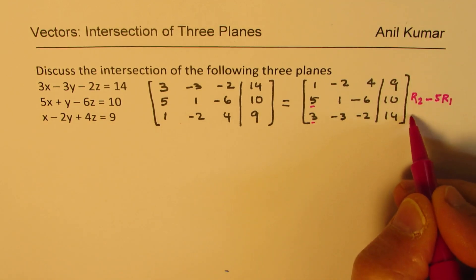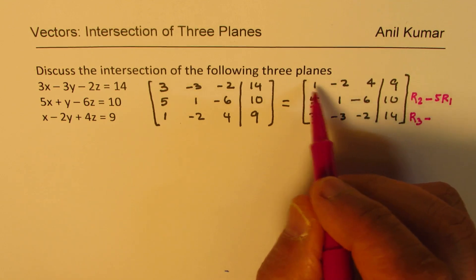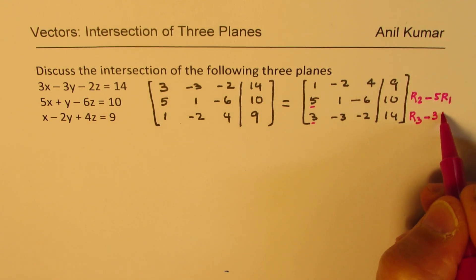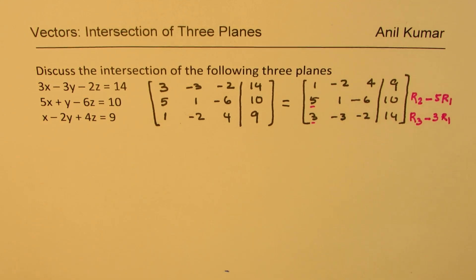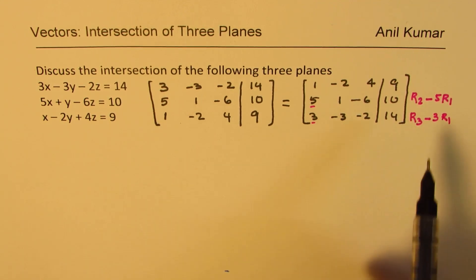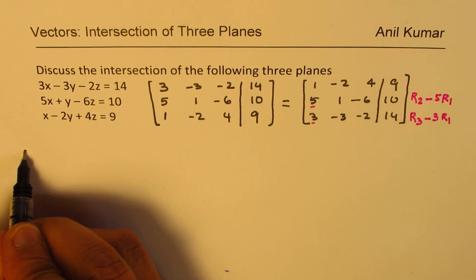And in this case from the third row, if I take away 3 times row number 1, then I can make this as 0. Perfect. So I am going to apply these operations.